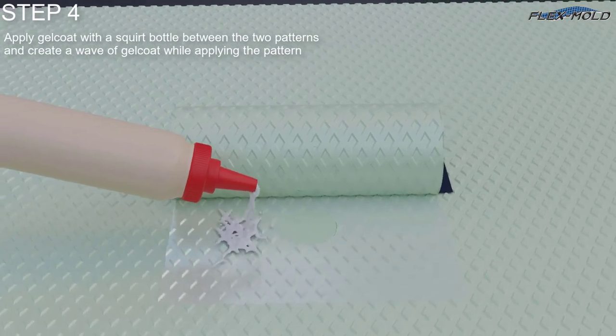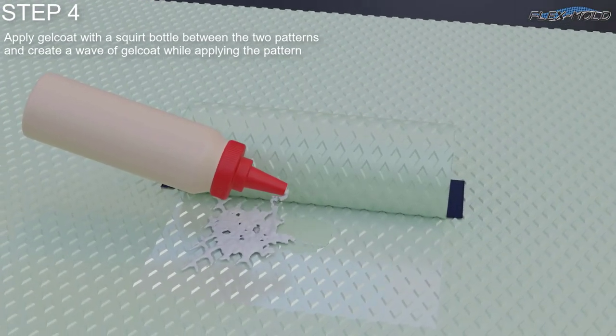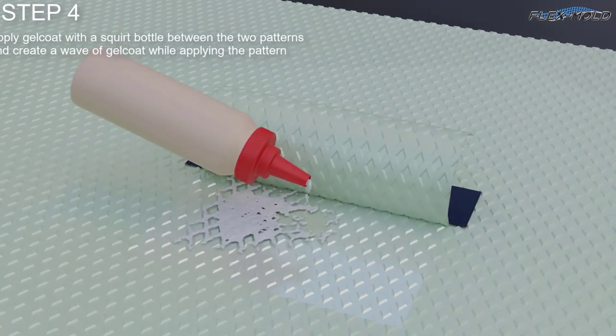Put the gel coat in the corner of the hinge and keep a wave of the gel coat out front of the pattern as you put the pattern down into place.